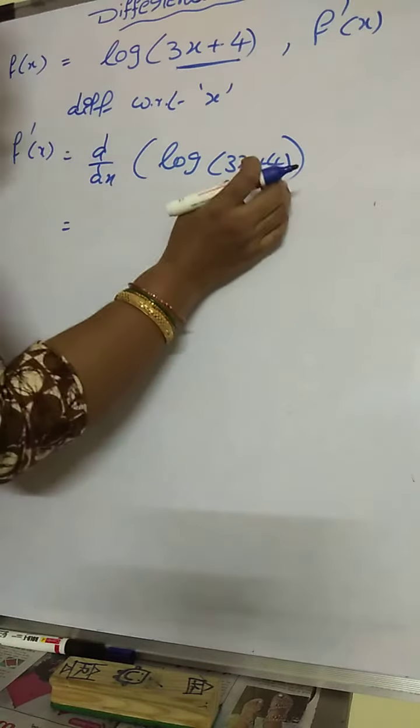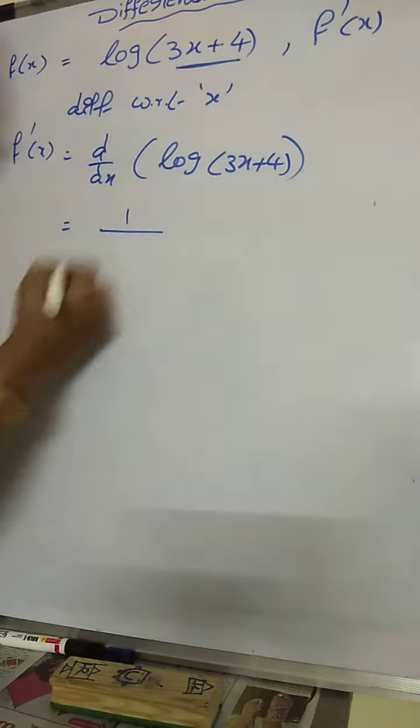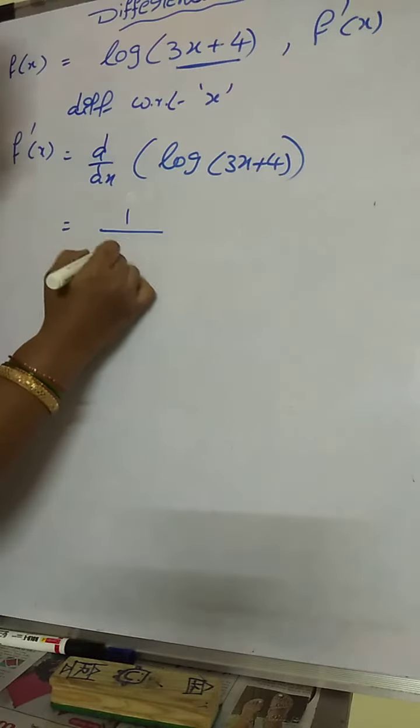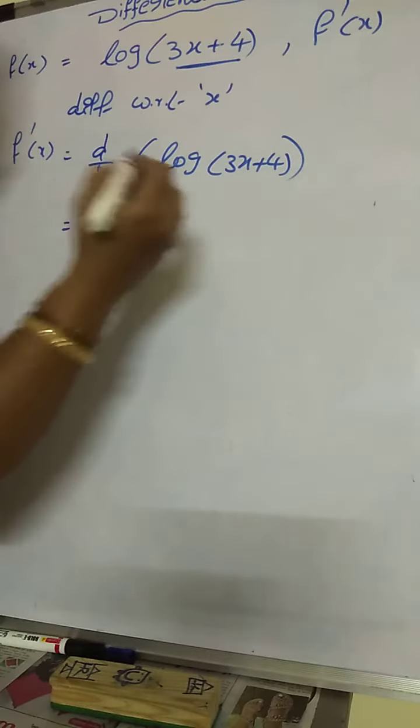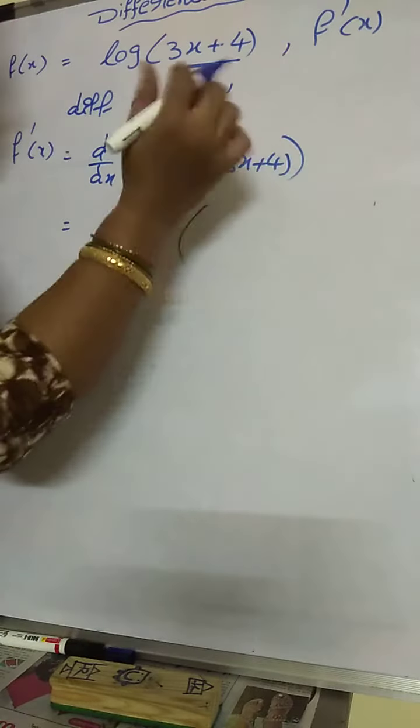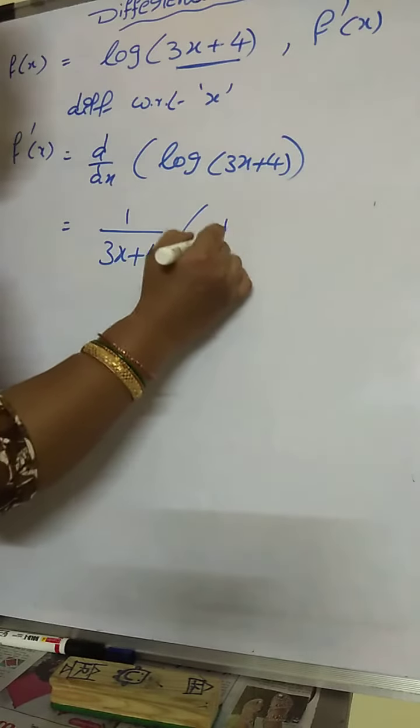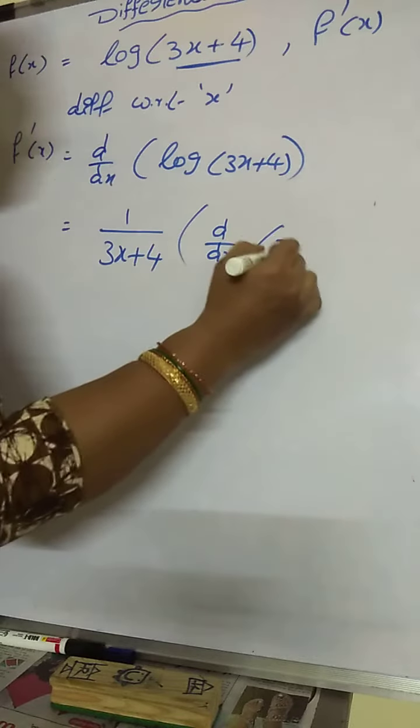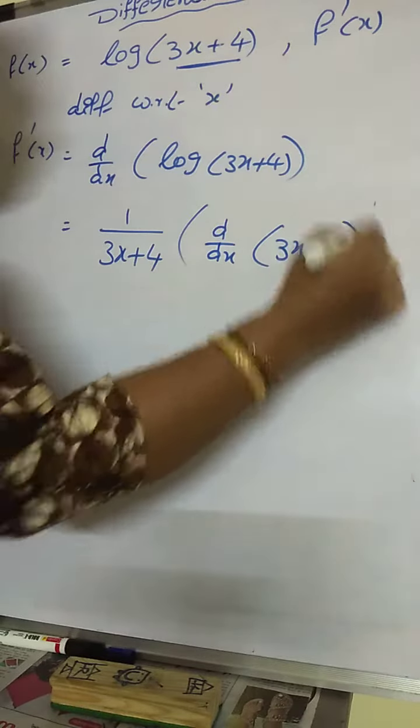Now log x is there. d by dx of log x is 1 by x. Whatever here is there. Then you write 1 by 3x plus 4. Into the inner part here. Log of 3x plus 4. Then again you d by dx of 3x plus 4.